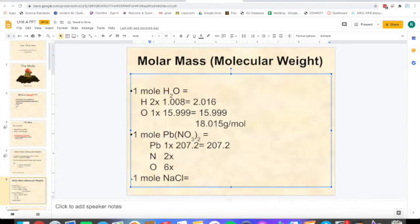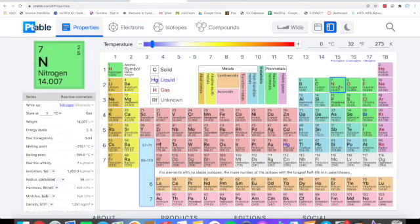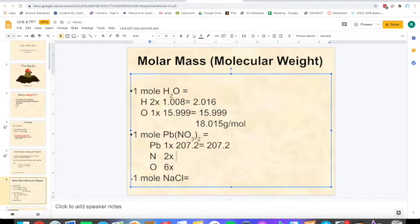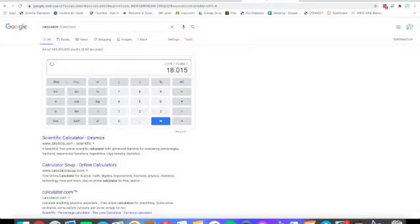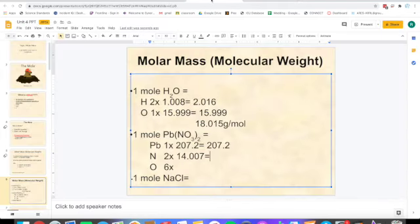Now we need to find nitrogen's or N's mass. Here's N, the bigger number is the mass, so it'll be 14.007. Two times 14.007 is 28.014.